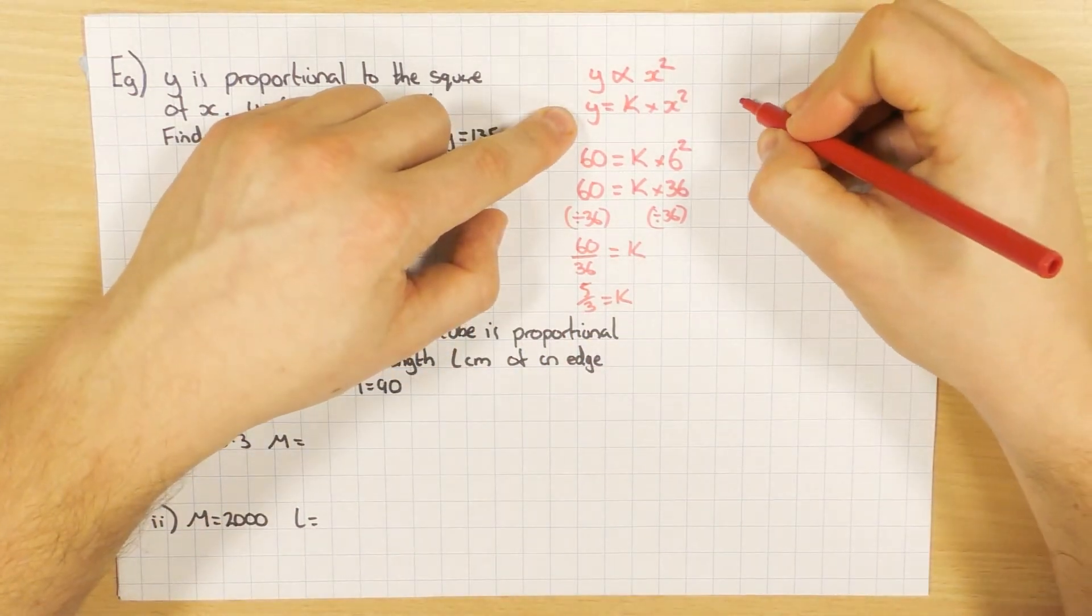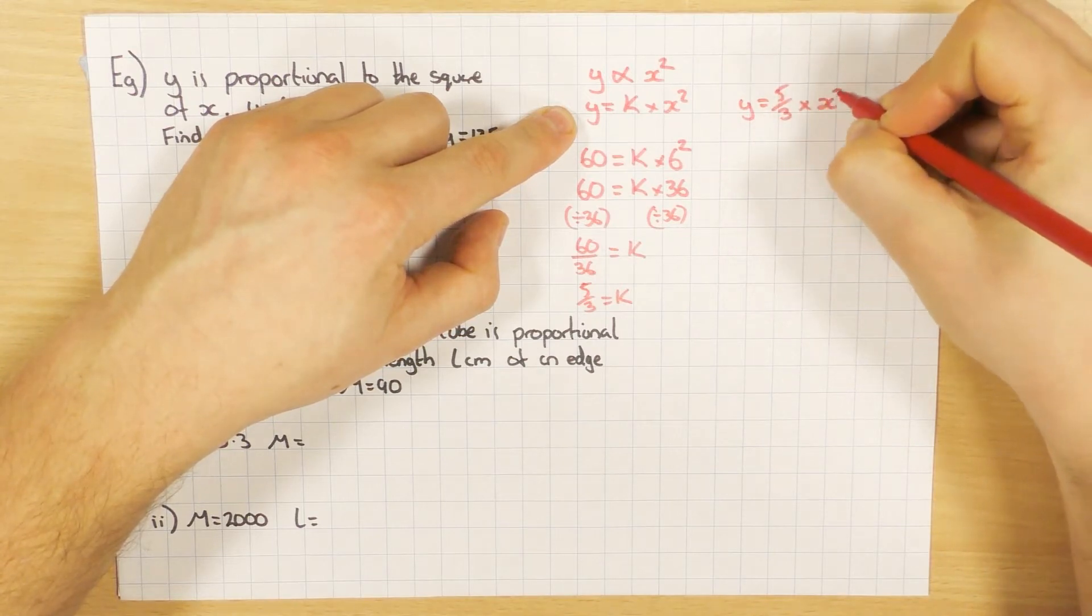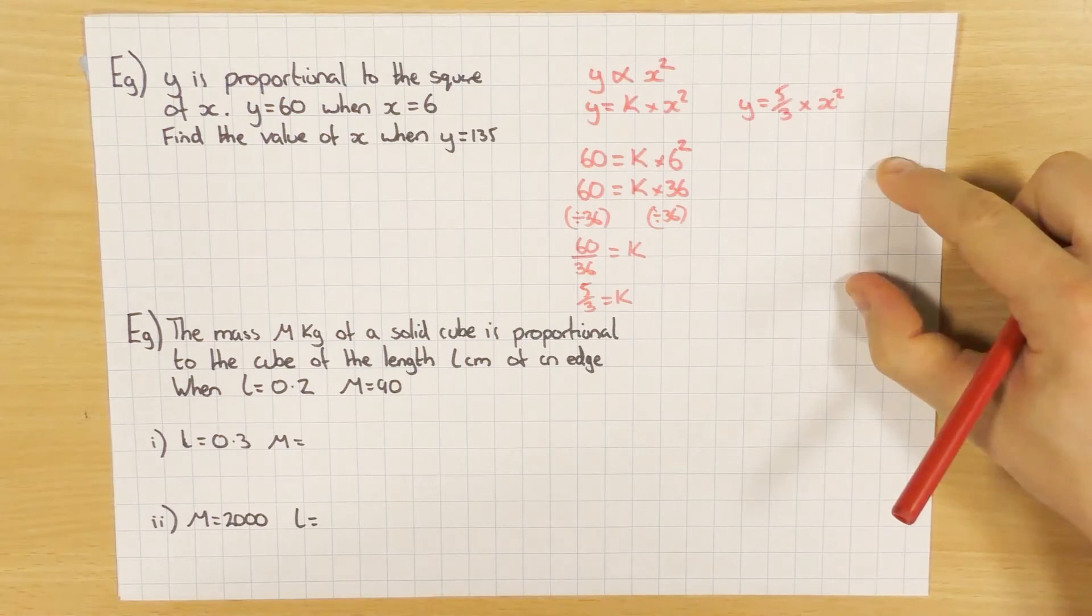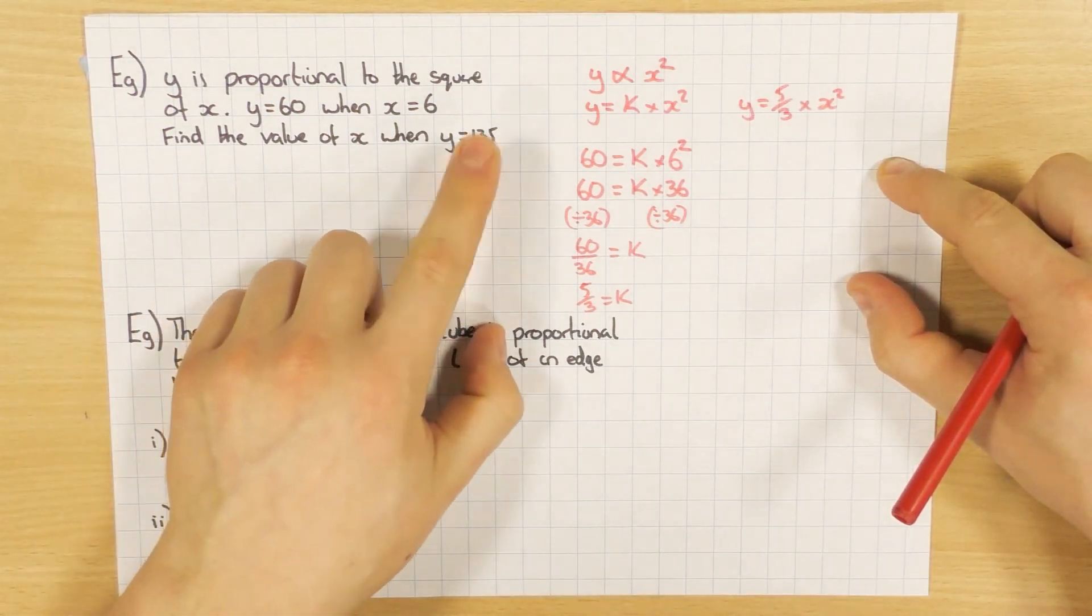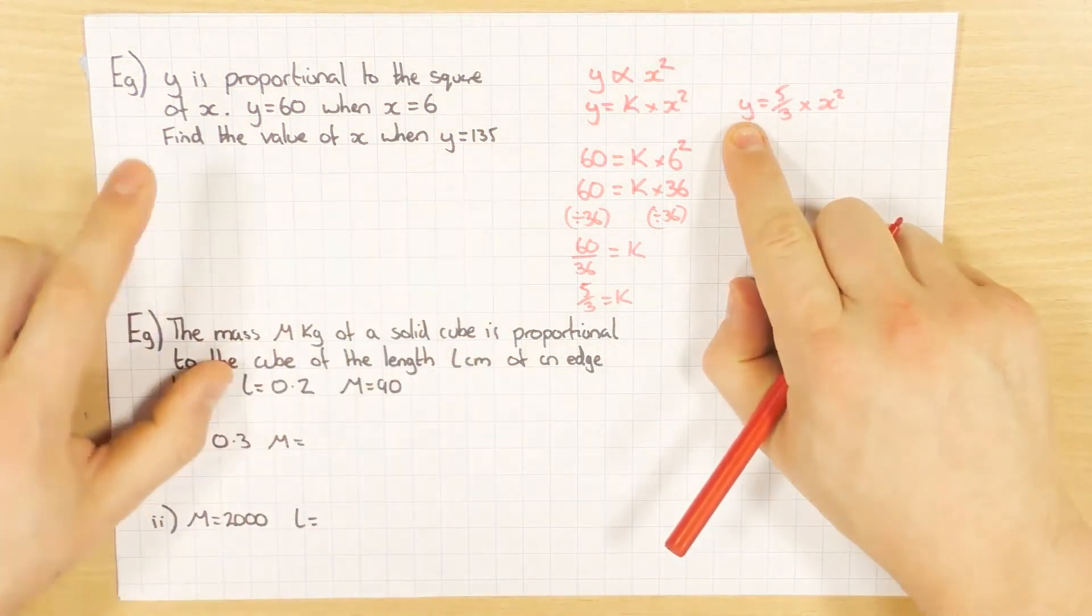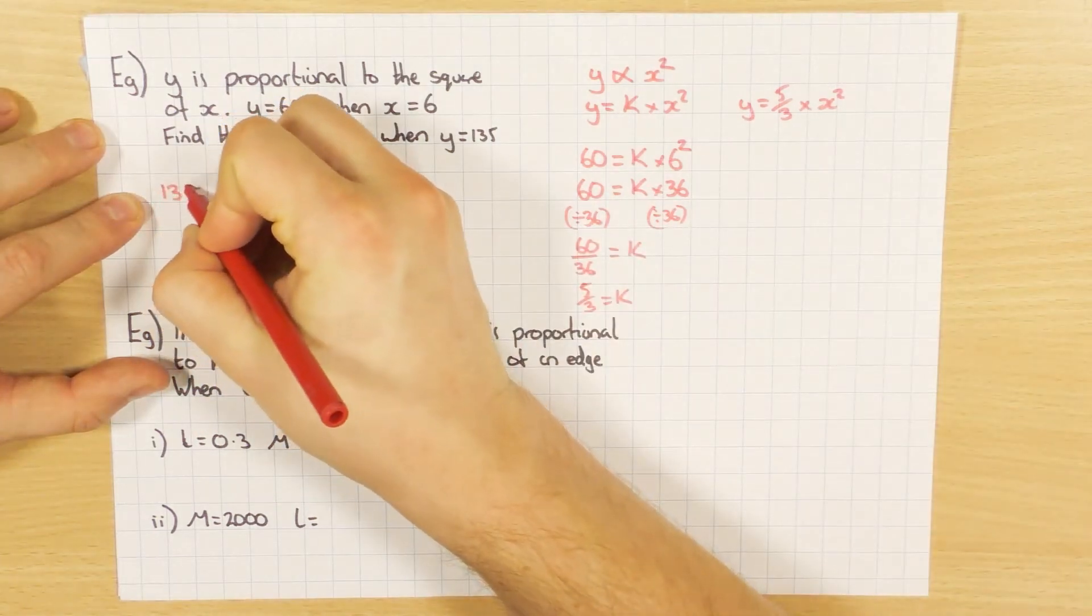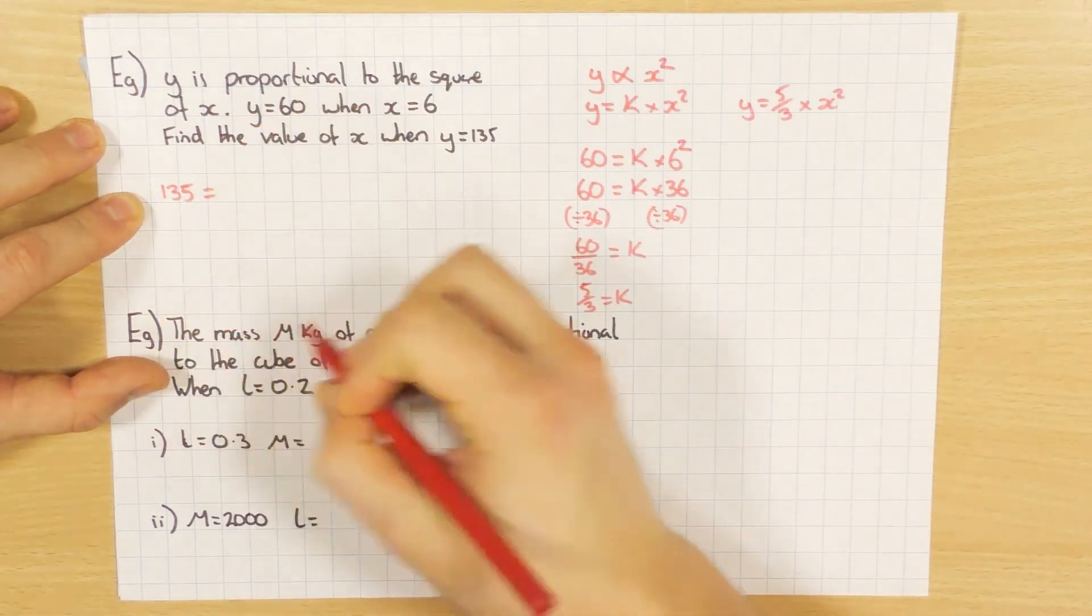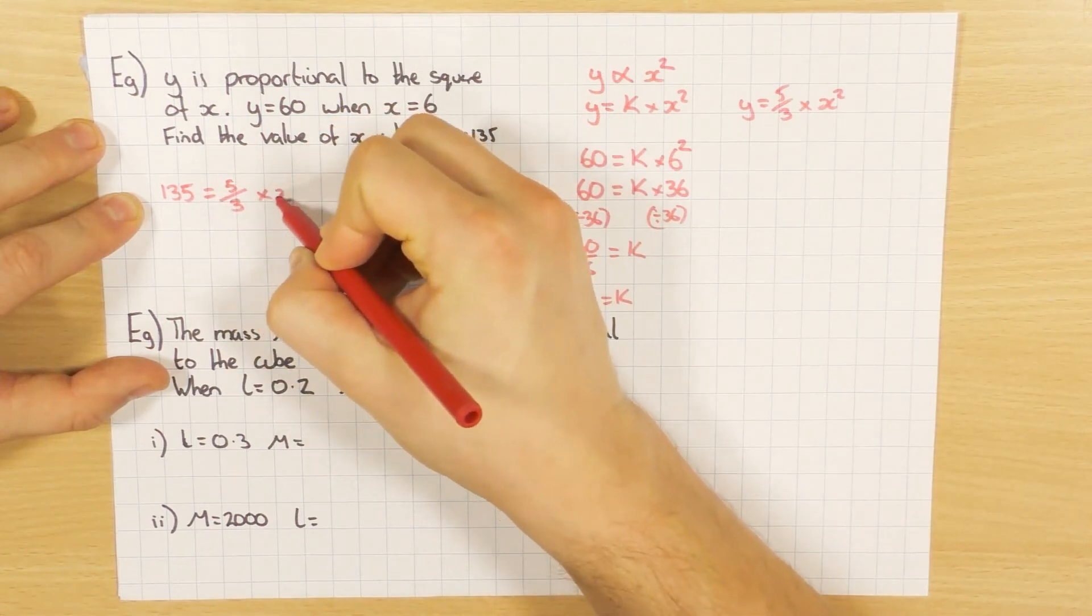So let's put that back into our formula. y equals 5 over 3 times x squared. Excellent. Then what's it after? Find the value of x when y is 135. So this time y is 135. So I'm going to come over here because I'll probably have a little bit more space. So 135, which is y, equals 5 over 3 times by x squared.